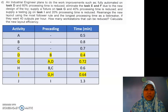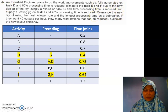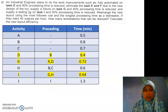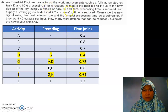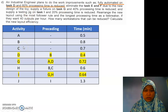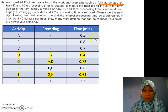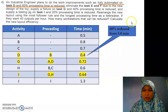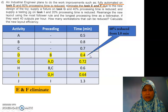Now we go to question D. There are some changes. Tasks A, B, and C have no change, so they stay. For task D, they reduce the time: the original is 1 minute, reduce by 60%, so you get 0.4 minutes. Then tasks E and F are eliminated — they're gone. Next, task G.